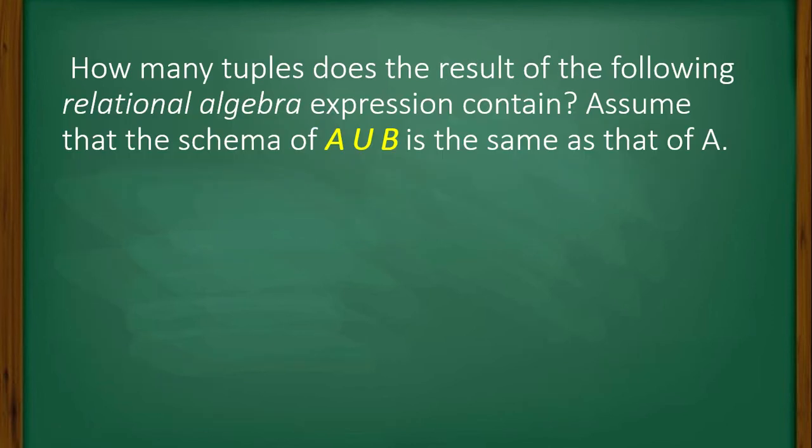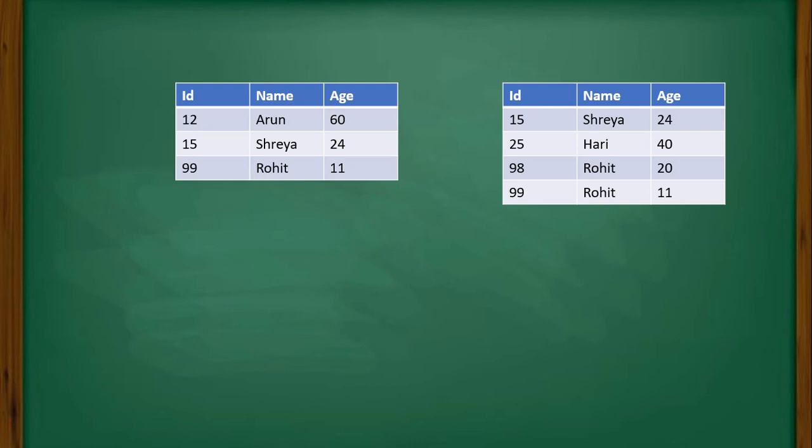Next, in continuation with this, how many tuples does the result of the following relational algebra expression contain? Assume that the schema of A union B is the same as that of A. So the relational algebra is given: (A ∪ B) ⋈ (A.id > 40 ∨ C.id < 15) C. Option A is 7, option B is 4, option C is 5, option D is 9.